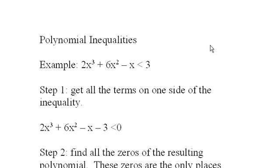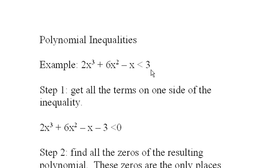Polynomial inequalities. Let's take a look at this example. We're looking for all x such that 2x cubed plus 6x squared minus x is going to be less than negative 3. And there may be lots of x's — an infinite number of x's that satisfy this inequality.